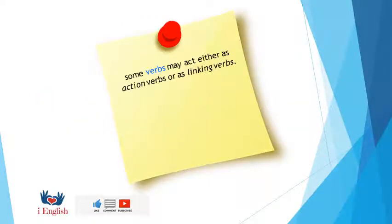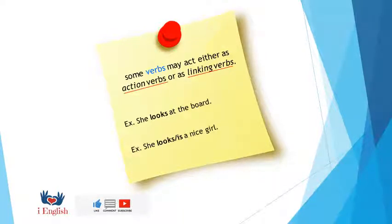Note, some verbs may act either as action verbs or as linking verbs. Here is an example. She looks at the board. Verb look acts as an action verb. But if we say she looks a nice girl, verb look acts like a linking verb. We can say it in other words, she is a nice girl. We can deduce that verb look and verb is have the same sound.